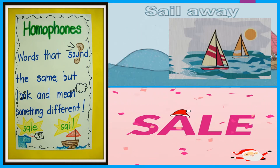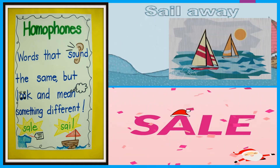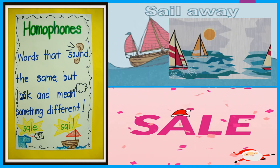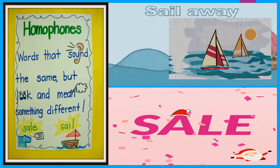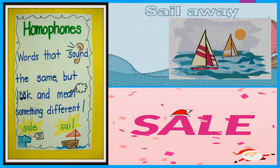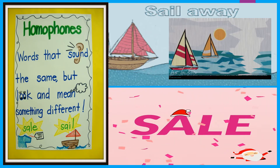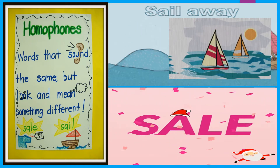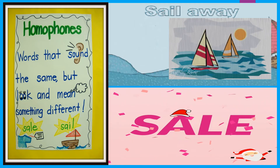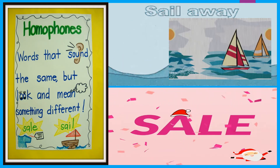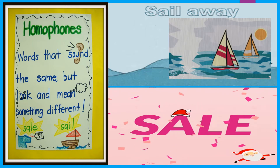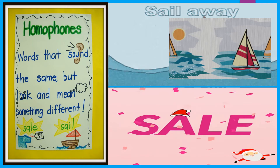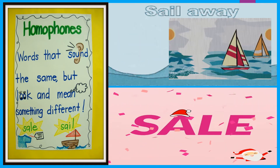Let's take an example of homophones — words that sound the same but look and mean something different. The first word is Sail, S-A-I-L. Sail means a boat or ship traveling on water. In Hindi we say Jal Yatra or Samudri Yatra. The other word is Sale, with spellings S-A-L-E.